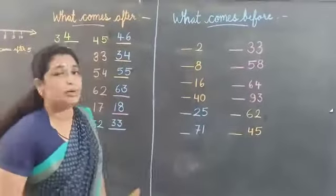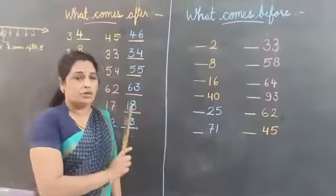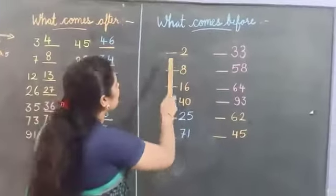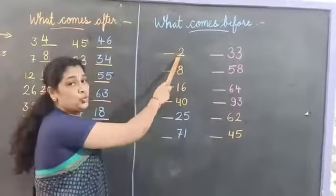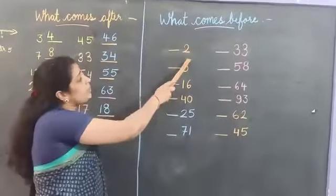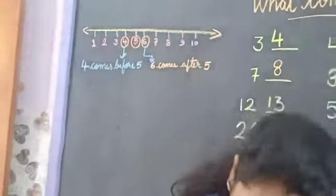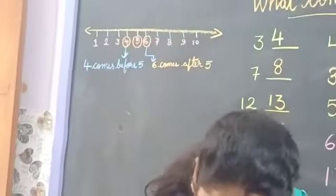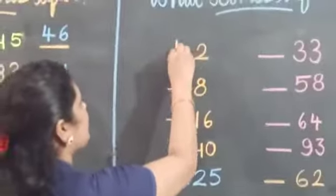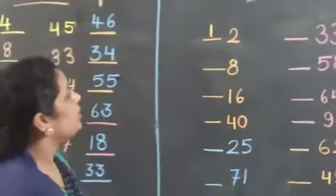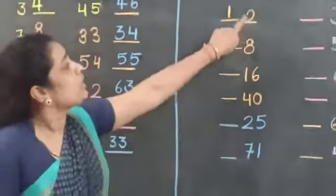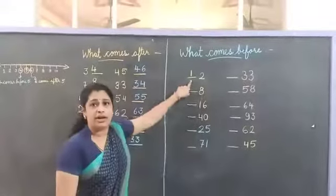Now let's learn about before. Which number is this? 2. What comes before 2? 2 comes before — which number is this? 1. So 1 comes before 2.